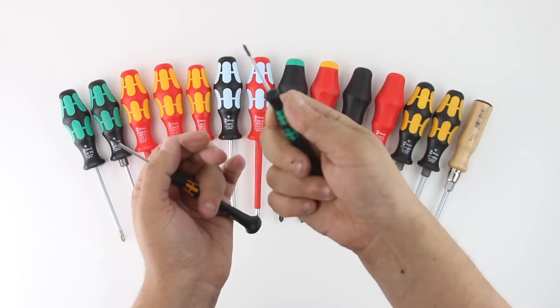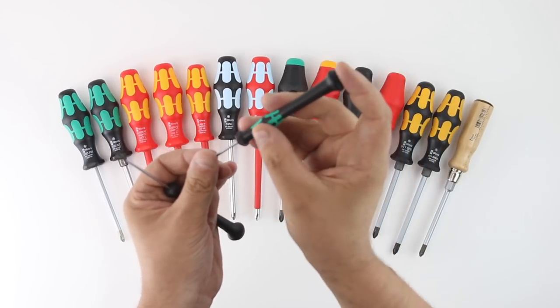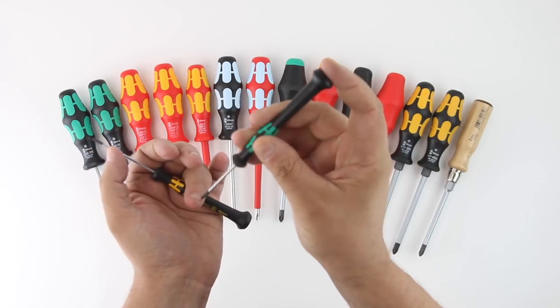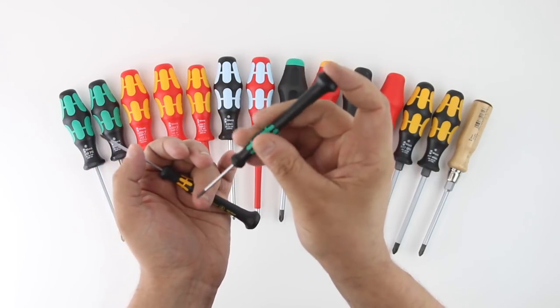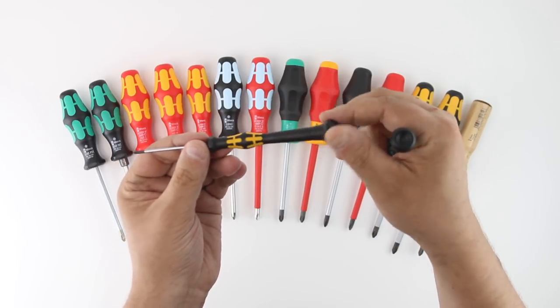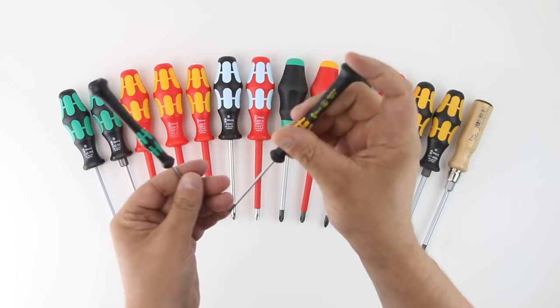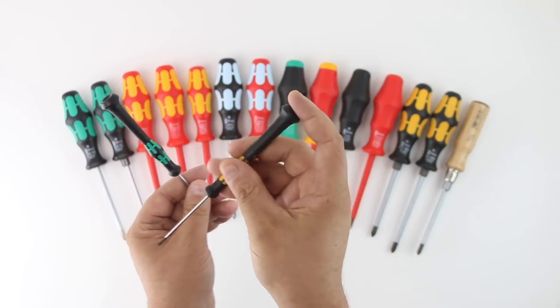Finally, the Wera Precision Drivers combine fast turning zones along with a power zone that is similar to the larger gripped handles. The rotating cap allows the user to hold it in multiple ways, allowing for use in a broad range of applications. They come in both standard and ESD-safe for use on electronics like computers and smartphones.